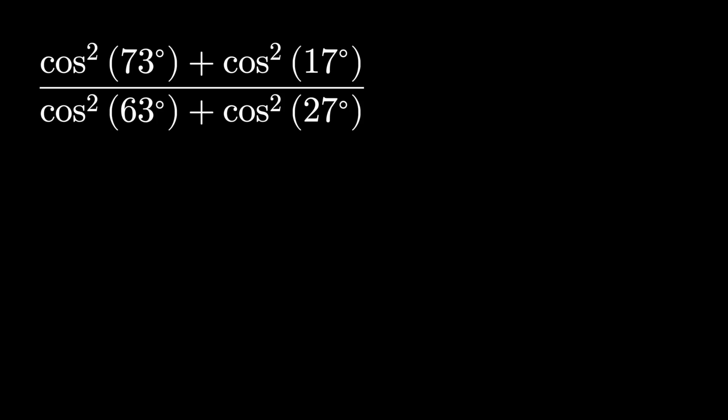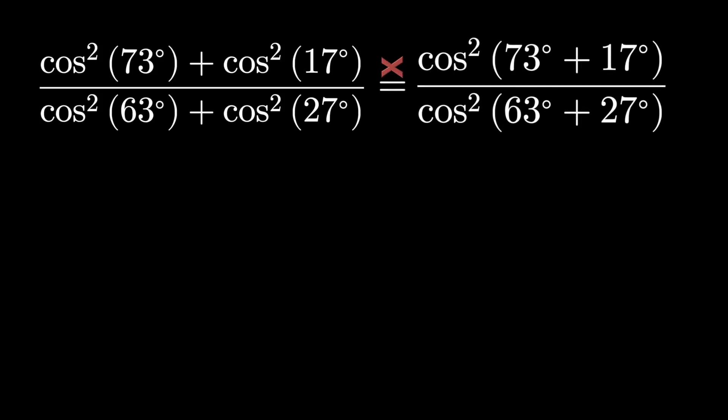Here's an admittedly annoying trig expression. You'd probably have to use a bunch of trig identities or maybe just a calculator. Fortunately, if you have an incorrect idea about how we combine these trig functions, you'll get to the right answer. Just add the arguments in the numerator and the denominator. It's cosine squared of 90 over cosine squared of 90.